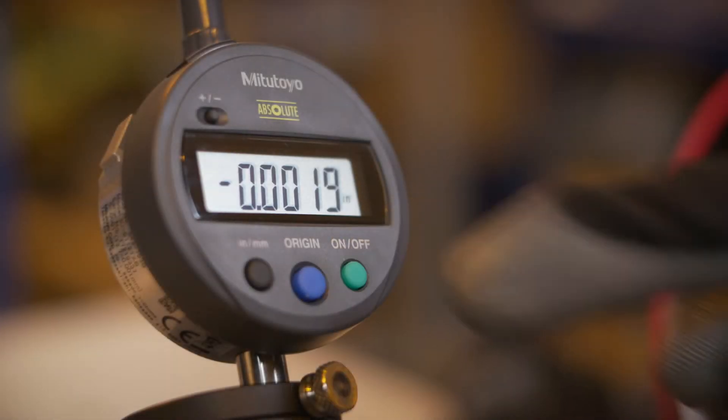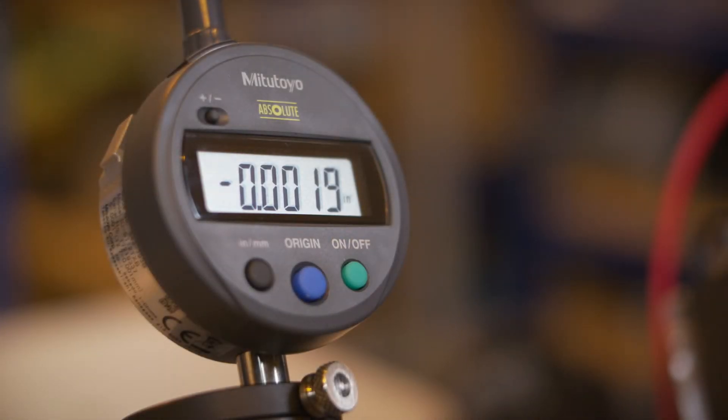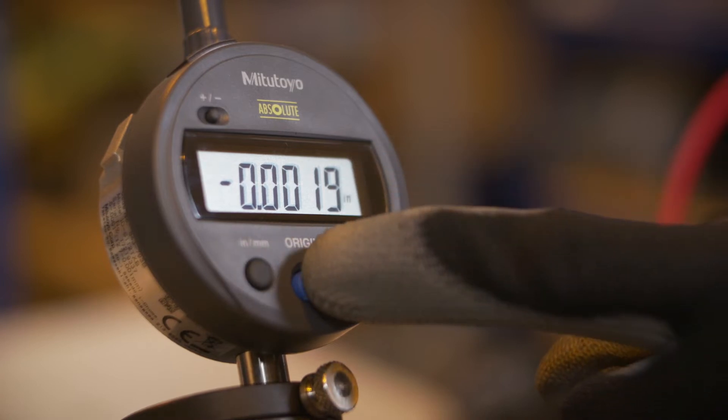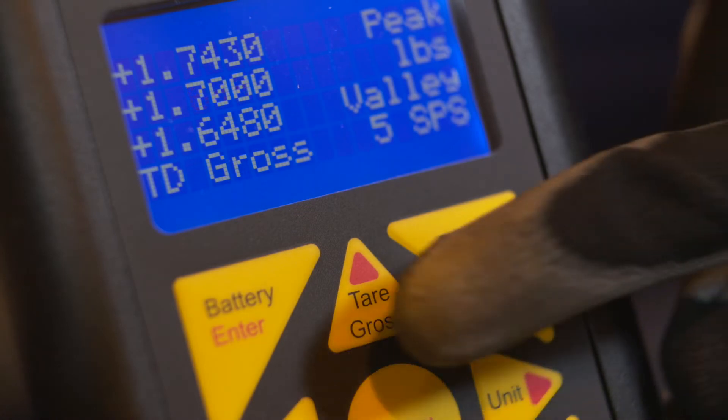Turn on the DTI gauge, making sure the units of measurement are set correctly and zero the reading. And finally, reset the load display by pressing the tare button.